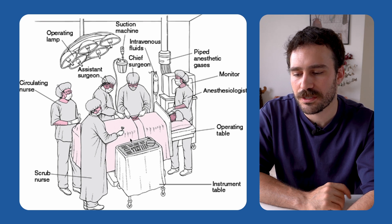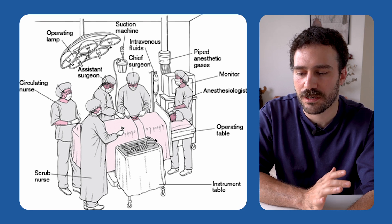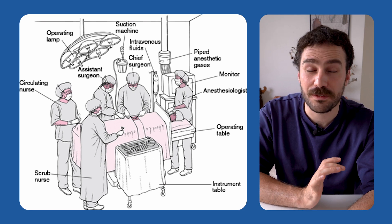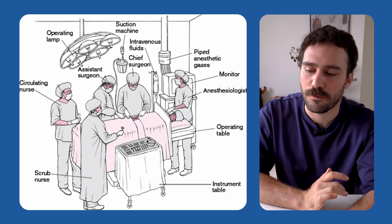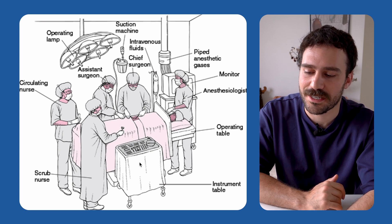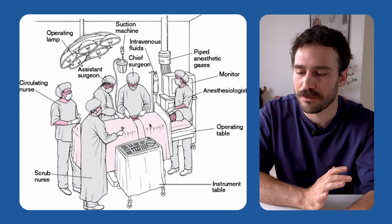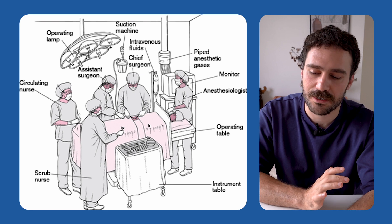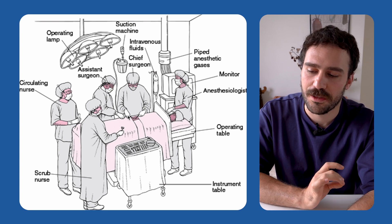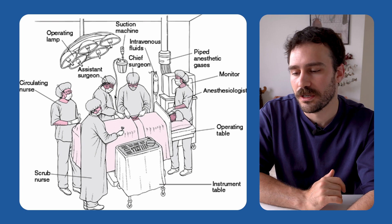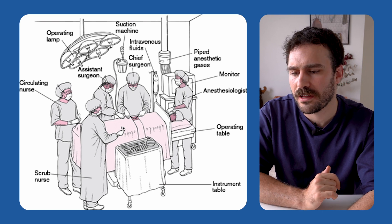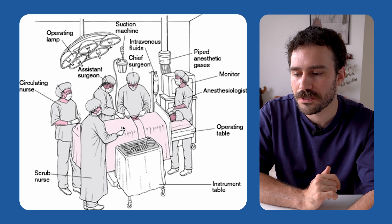The scrub nurse gets all that stuff ready beforehand. They're often the first ones to scrub for the case because they need to set up everything, and then once the patient's asleep and everything is organized, the surgeon and the assistant go and get scrubbed. That's sort of how that flow works.